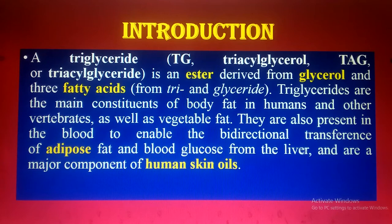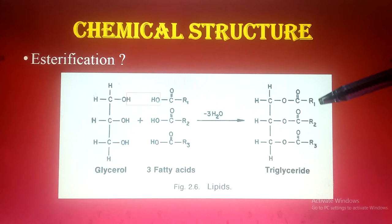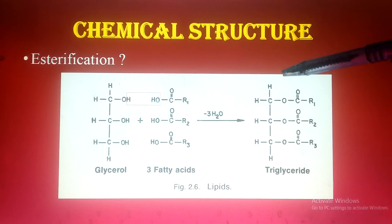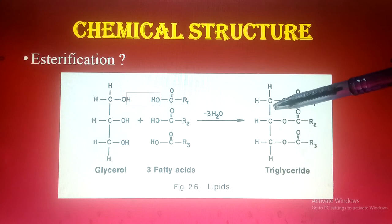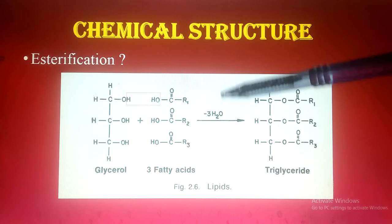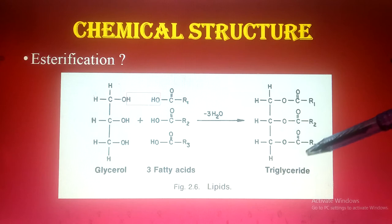This is the chemical structure of the triglyceride, and you can see here the chemical reaction known as esterification. In esterification, one glycerol reacts with three fatty acids. During esterification, a hydrogen ion is removed from the glycerol alcohol and a hydroxyl ion is removed from the fatty acids. So one hydrogen from glycerol and the OH group from the fatty acids produce water molecules. You can see here three water molecules are produced because three fatty acids are present. The glycerol is a three-carbon-containing alcohol. You can see the esterification mechanism in which three fatty acids react with glycerol to produce the triglyceride.